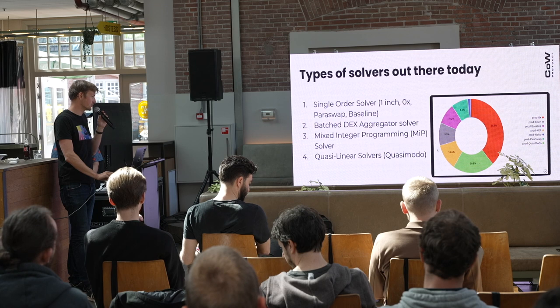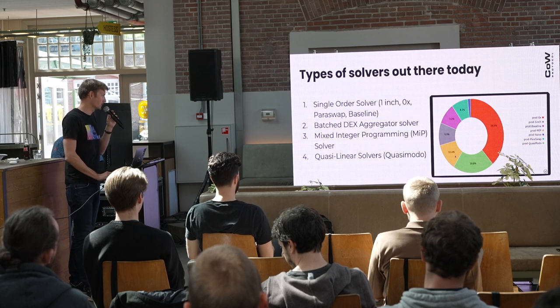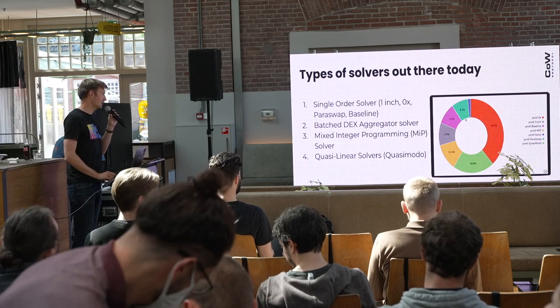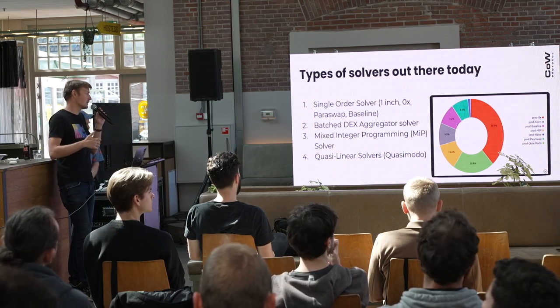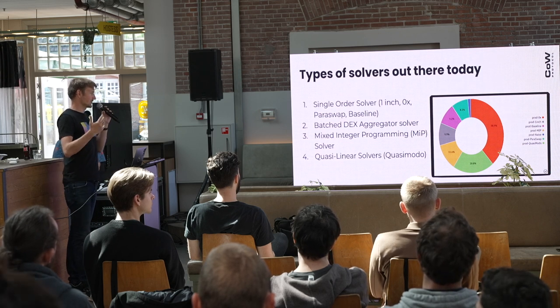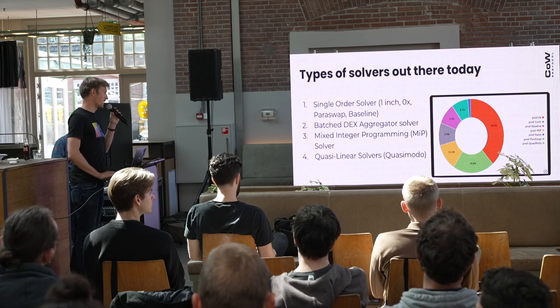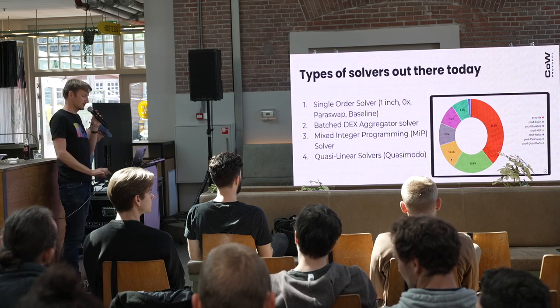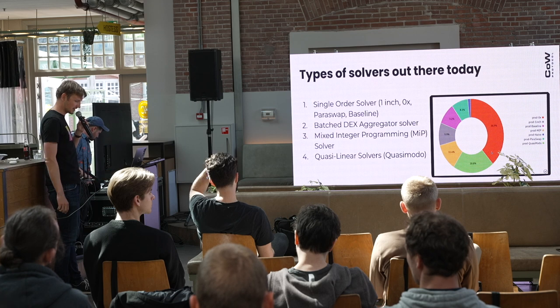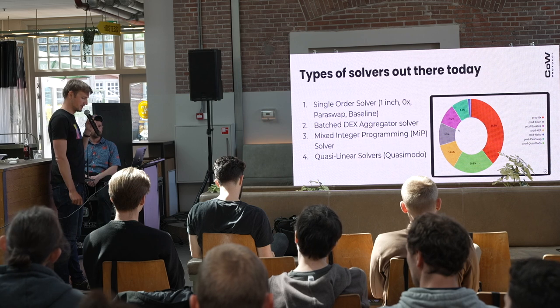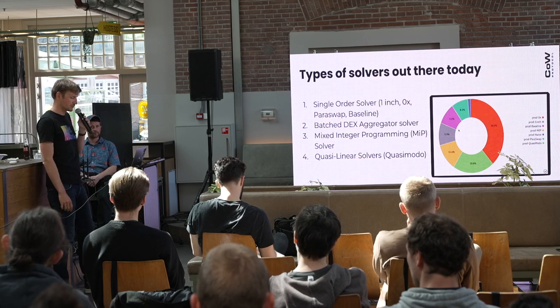On the right side you can see the distribution of batch wins from a couple of weeks ago. Even solvers that you'd assume might be inferior are still winning a good amount of batches — around five to ten percent. The DEX aggregator solvers are currently dominating because many batches still come with just one order. It's still very early days. The competition is probably not as strong as it hopefully will be in a few months, so if you join now there's still a lot of money to be made.